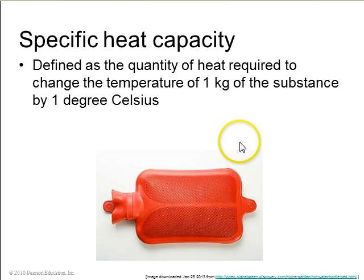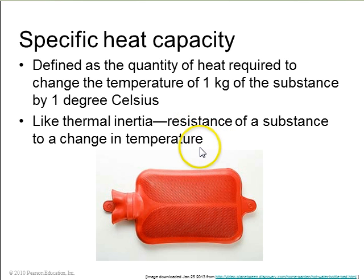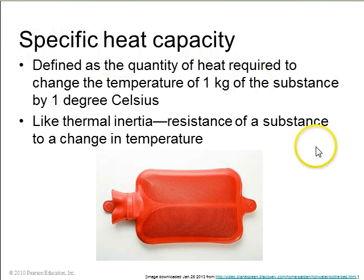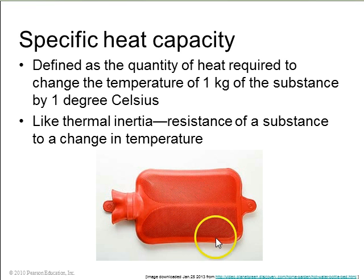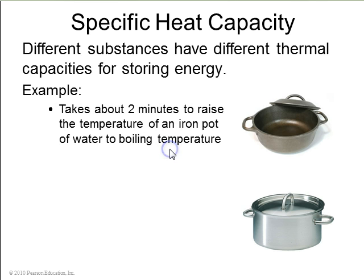Specific heat capacity is a property of any substance, defined as the quantity of heat required to change the temperature of one kilogram of the substance by one degree Celsius. It's like thermal inertia — any substance will resist a change in temperature, and how much it resists is determined by its specific heat capacity. So this water bottle has a high specific heat capacity, so if it's hot, it stays hot for a long time. Different substances may have different specific heat capacities.